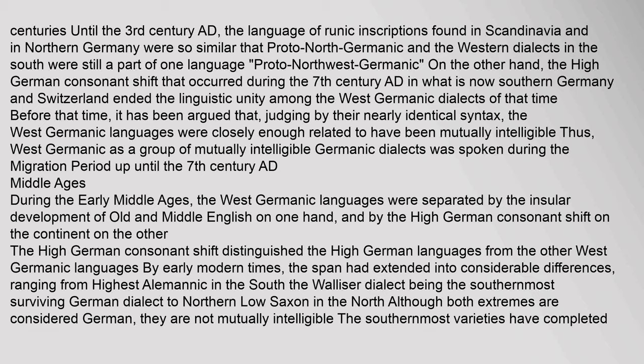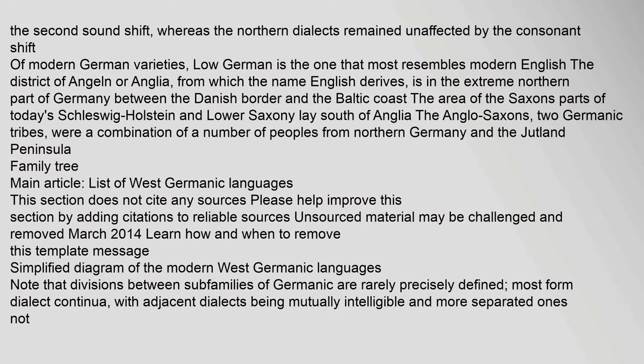During the early Middle Ages, the West Germanic languages were separated by the insular development of Old and Middle English on one hand, and by the High German consonant shift on the continent on the other. The High German consonant shift distinguished the High German languages from the other West Germanic languages. By early modern times, the span had extended into considerable differences, ranging from the highest Alemannic in the south — the Walliser dialect being the southernmost surviving German dialect — to Northern Low Saxon in the north. Although both extremes are considered German, they are not mutually intelligible. The southernmost varieties have completed the second sound shift, whereas the Northern dialects remained unaffected by the consonant shift.